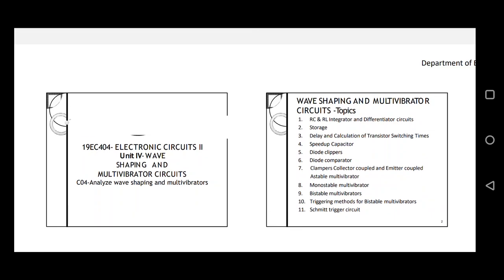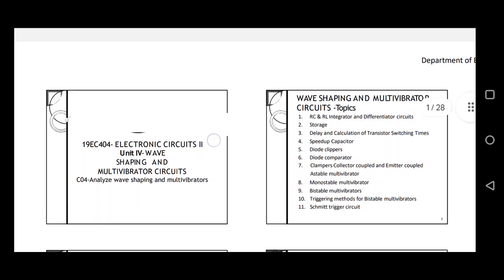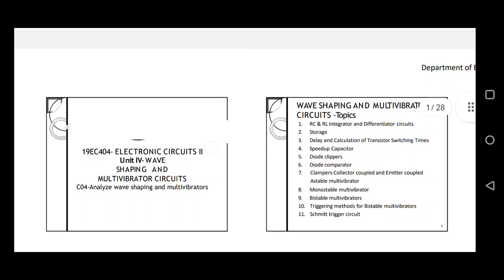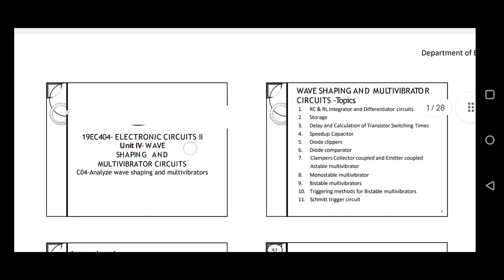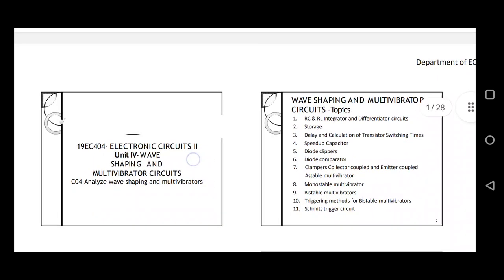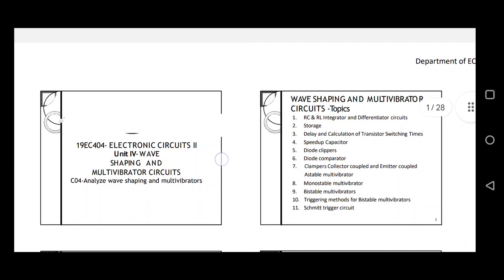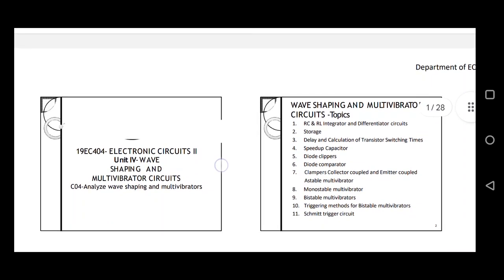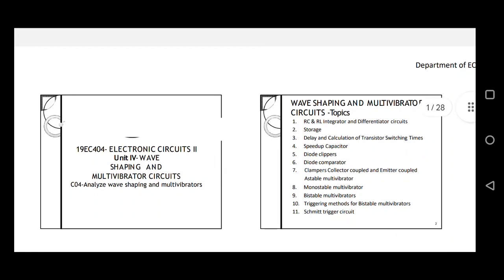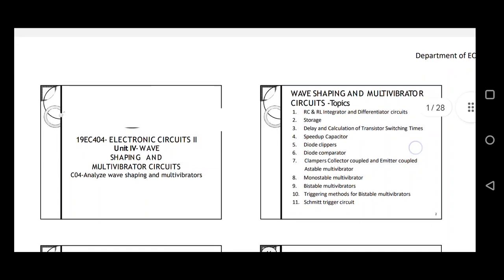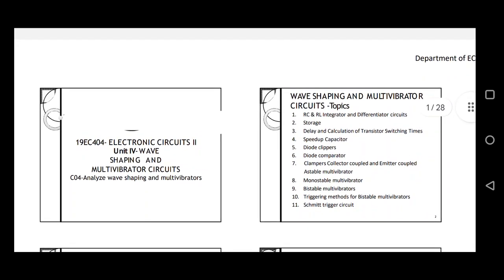This is about the 4th Unit of Electronic Circuits. The title of the 4th Unit is Wave Shaping and Multi Vibrator Circuits. The course outcome of this unit is: at the end of the course, the learners should be able to analyze Wave Shaping and Multi Vibrator Circuits. Let us see the content of the 4th Unit.